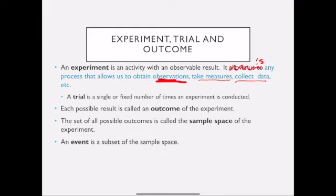A trial is a single or fixed number of times an experiment is conducted. And each possible result is the outcome of an experiment. So for example, if I flip, my experiment is to flip a coin once, I do that once. That's my single trial. And my outcome would be heads or tails.